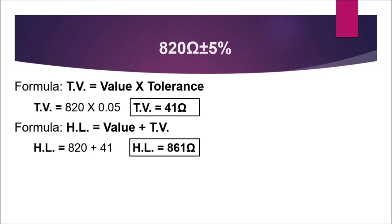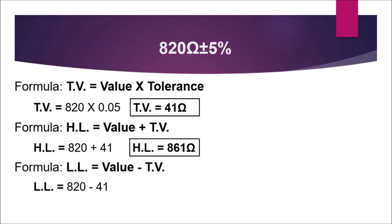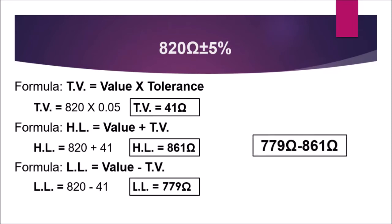Next, we're going to compute the lower limit using the formula: value minus tolerance value. So 820 minus 41 is equal to 779 ohms. Therefore, the lower limit is 779 ohms and the higher limit is 861 ohms, giving us a range.